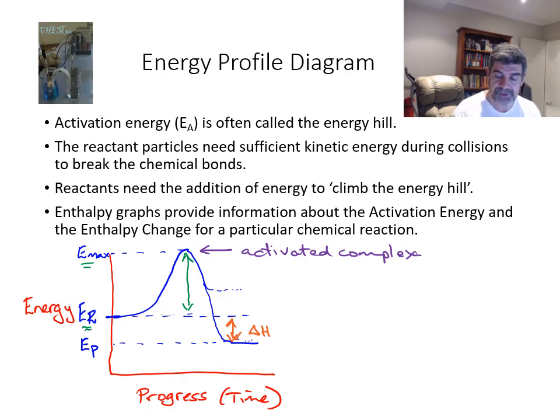So this tells us something about the reaction in this case because the products, the energy of the products is less than the energy of the reactants. Then energy must have been lost from the system. The delta H value is going to be a negative value and therefore this is going to be an exothermic reaction. And that means that our energy profile diagrams allow us to do a number of very important things when we look at each of these different types of graphs.